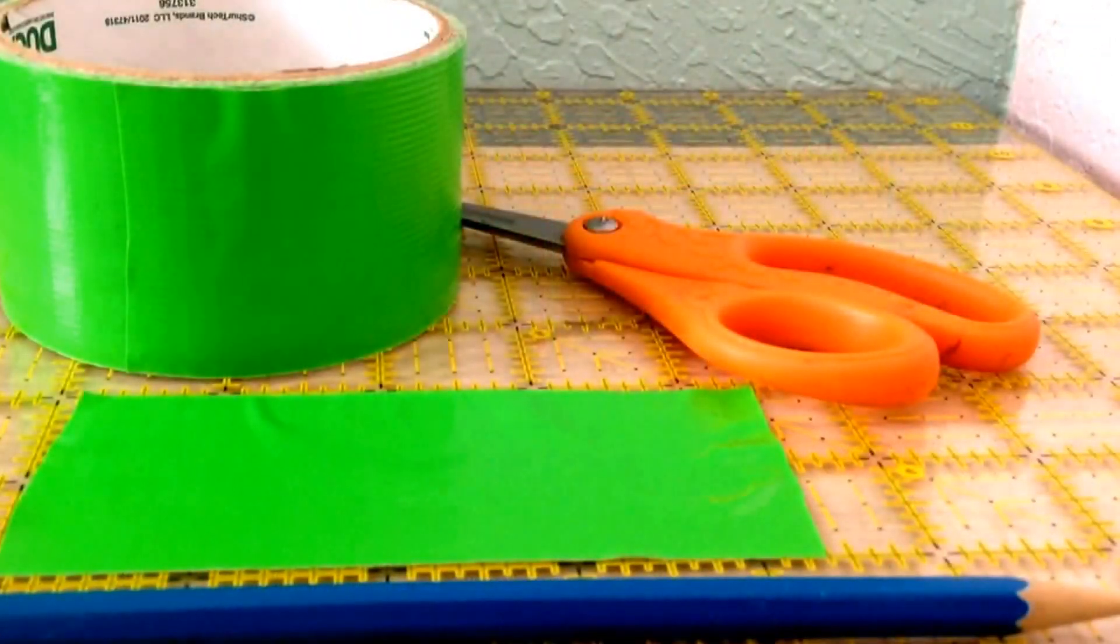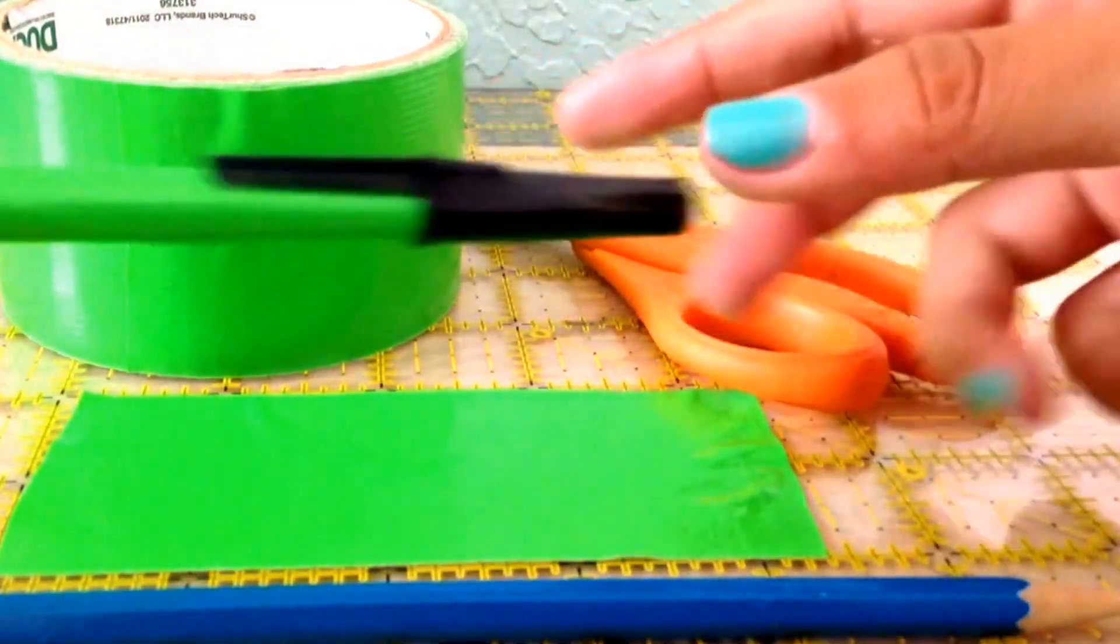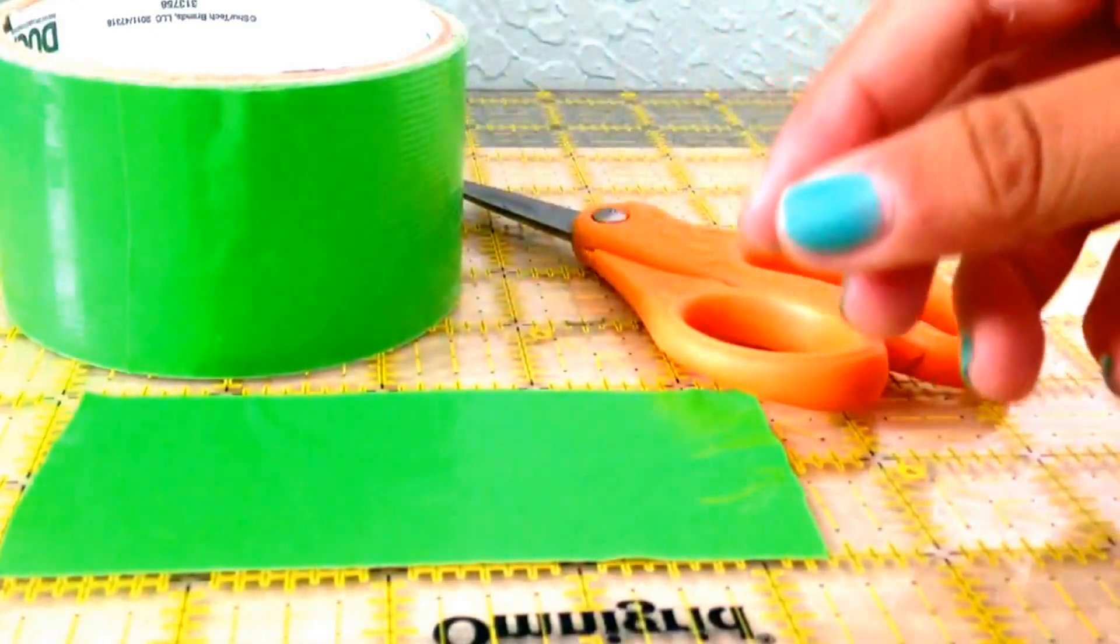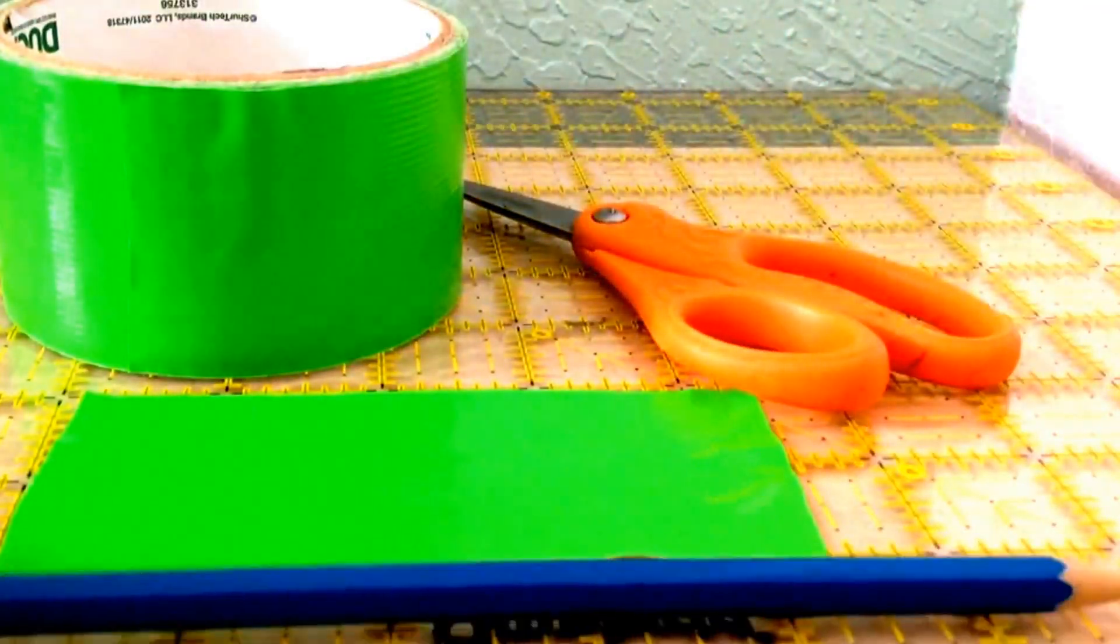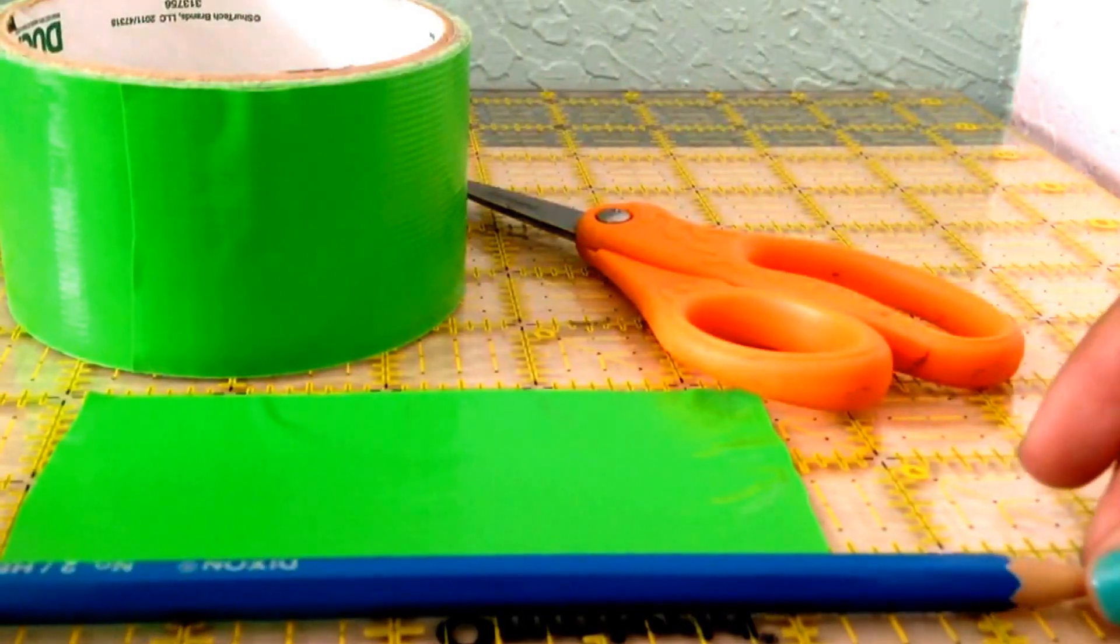Now, take the color you will be using for your stem. I will be using green, like here. Take a strip and make it the size a little smaller than the size of your pencil or pen.